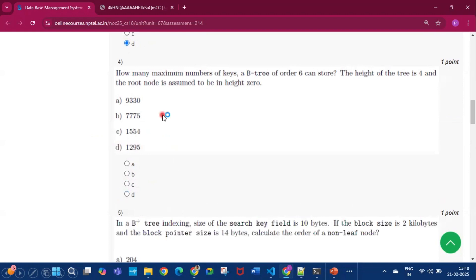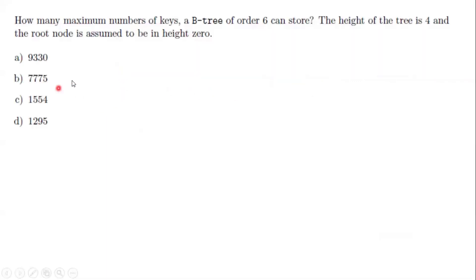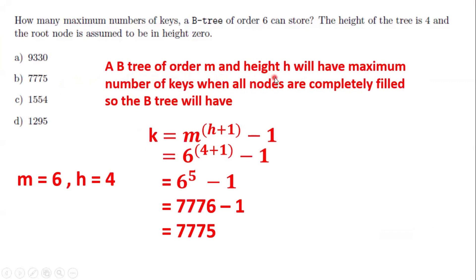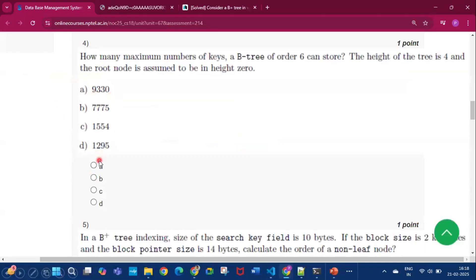Question 4: How many maximum keys can a B-tree of order 6 store if the height is 4 (root at height 0)? A B-tree of order m and height h stores a maximum of m^(h+1) − 1 keys when all nodes are completely filled. So: 6^5 − 1 = 7776 − 1 = 7775. Option B (7775) is the answer.